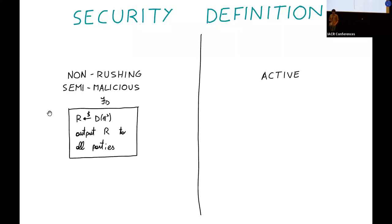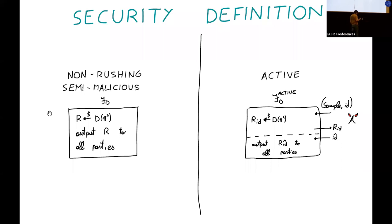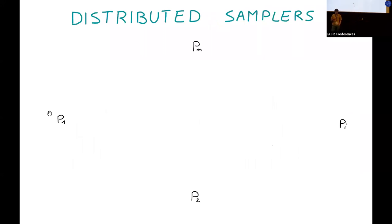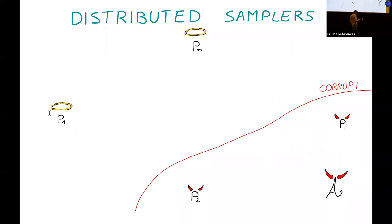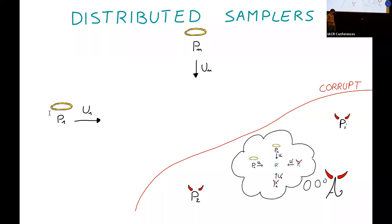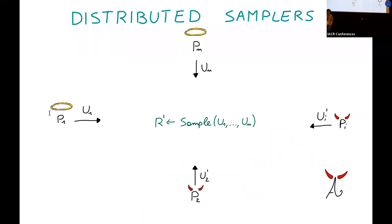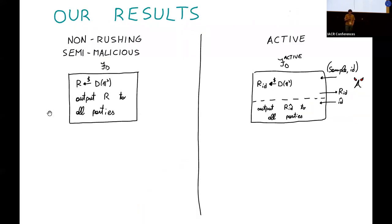We also analyzed active security, and here we have to modify the functionality a little bit. In particular, we have to allow the adversary to query the functionality for samples. The adversary can issue as many queries as it likes. At a certain point, it can choose one of the samples it received — the one that it likes the most — and it can instruct the functionality to output that value to all the honest players. The reason we need this particular functionality is Russian behavior. Suppose that the adversary corrupts only P2 and P5. Using rushing behavior, it can obtain the messages of the honest players before it sends the messages of the corrupted parties. At that point, it can rerun the protocol in its head many times, regenerating the messages of the corrupted parties only and obtaining many different samples. It can choose the one it likes the most and send the corresponding messages of the corrupted players in the real protocol, ensuring the honest parties output the pre-computed value.